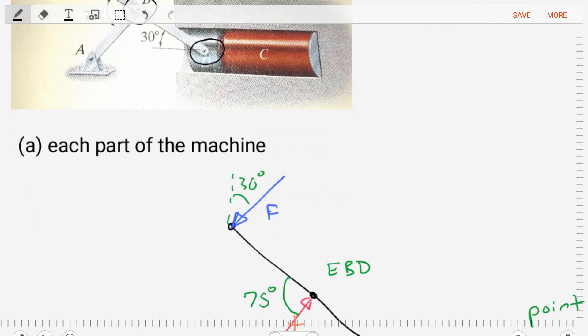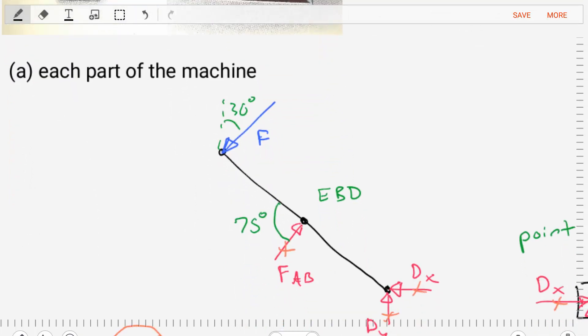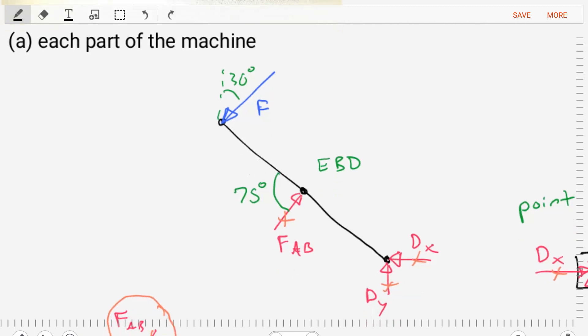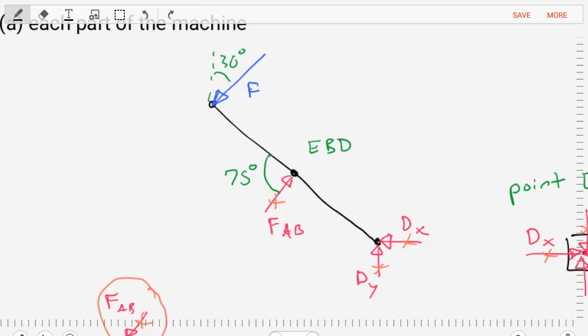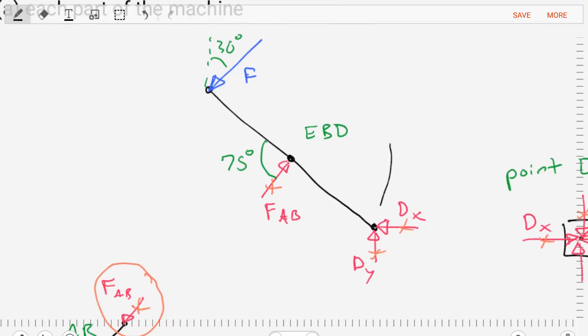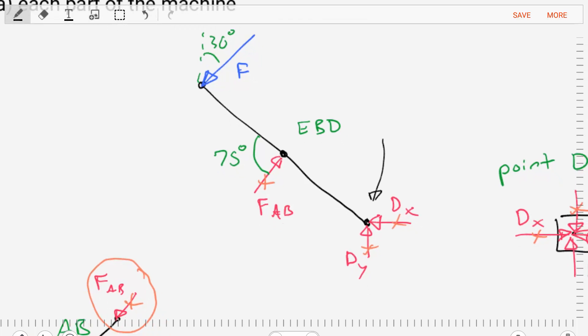So let's replace the short link connection with the correct reaction, which would be a force along the line of action of that short link, FAB. And let's replace the pin connection to the can crusher as forces DX and DY.